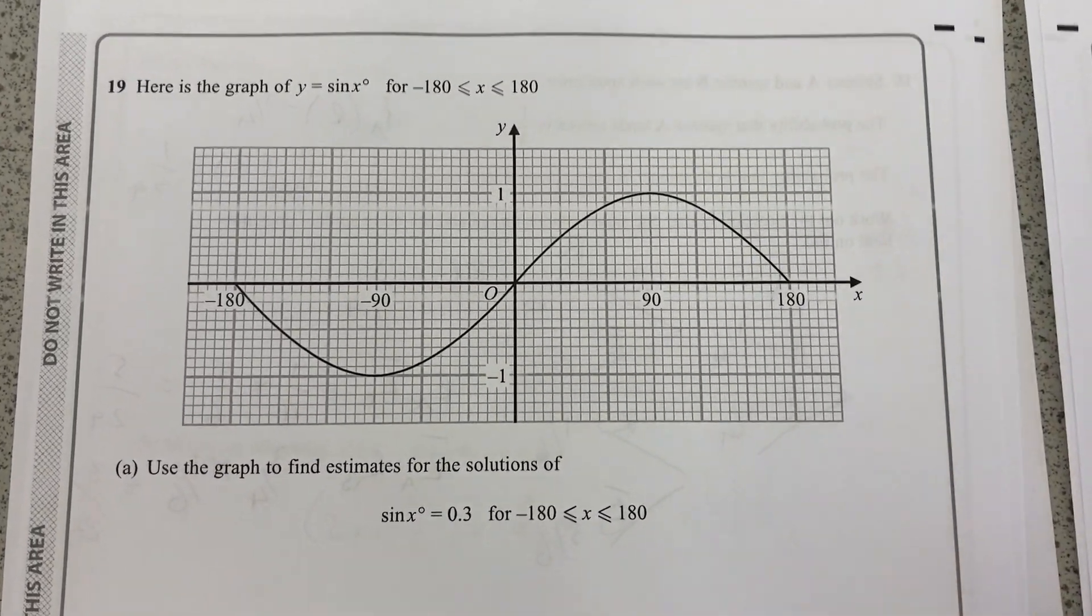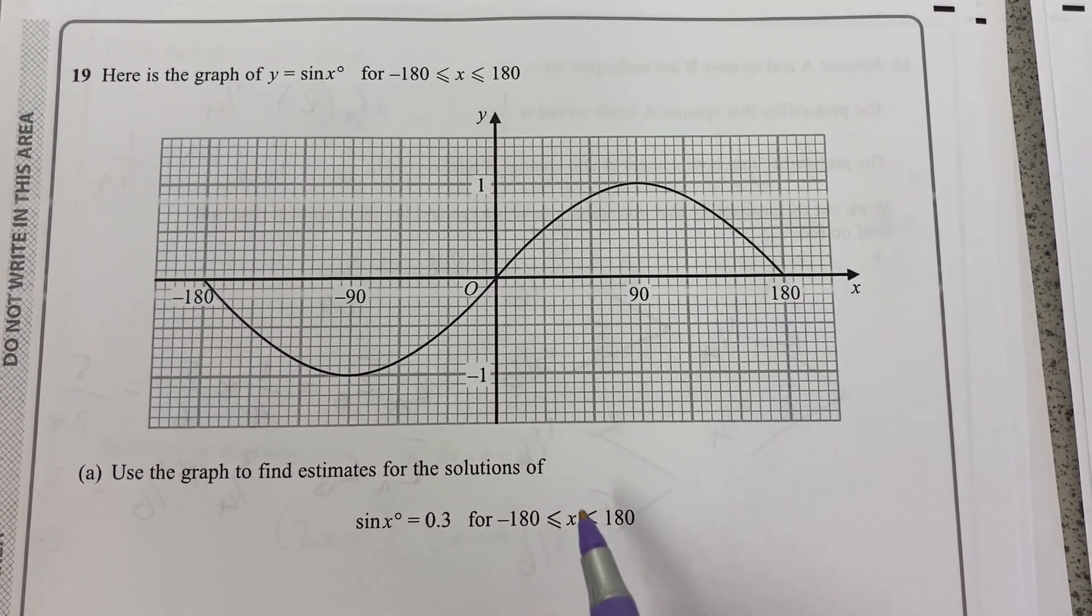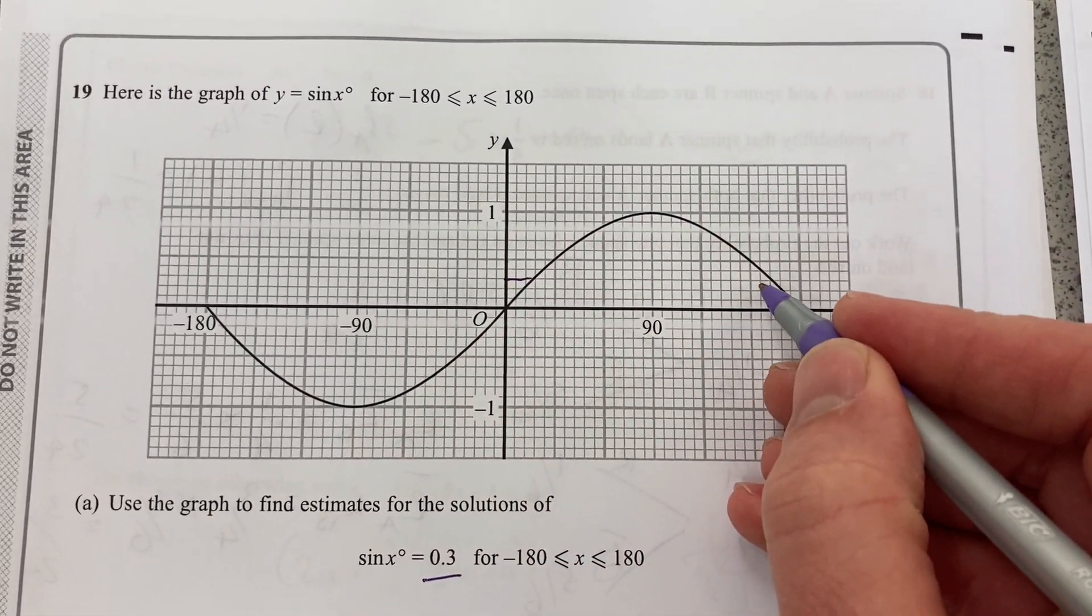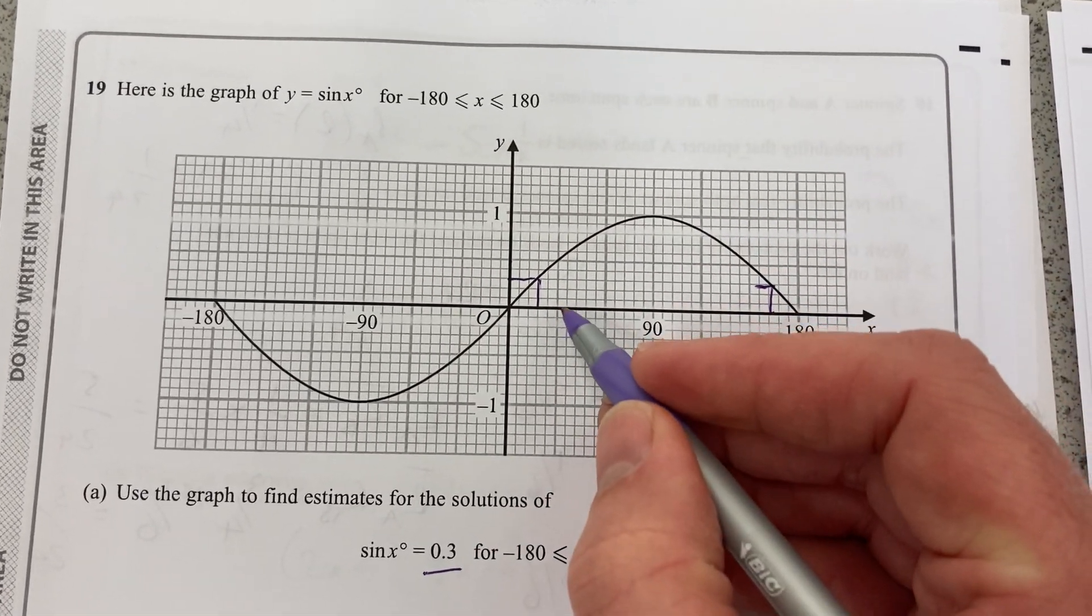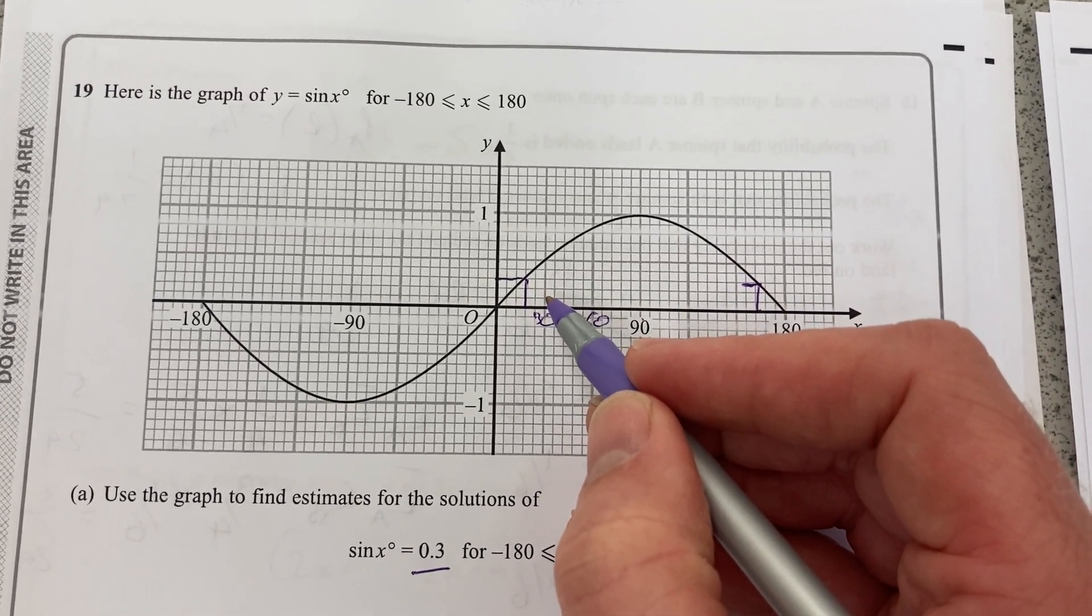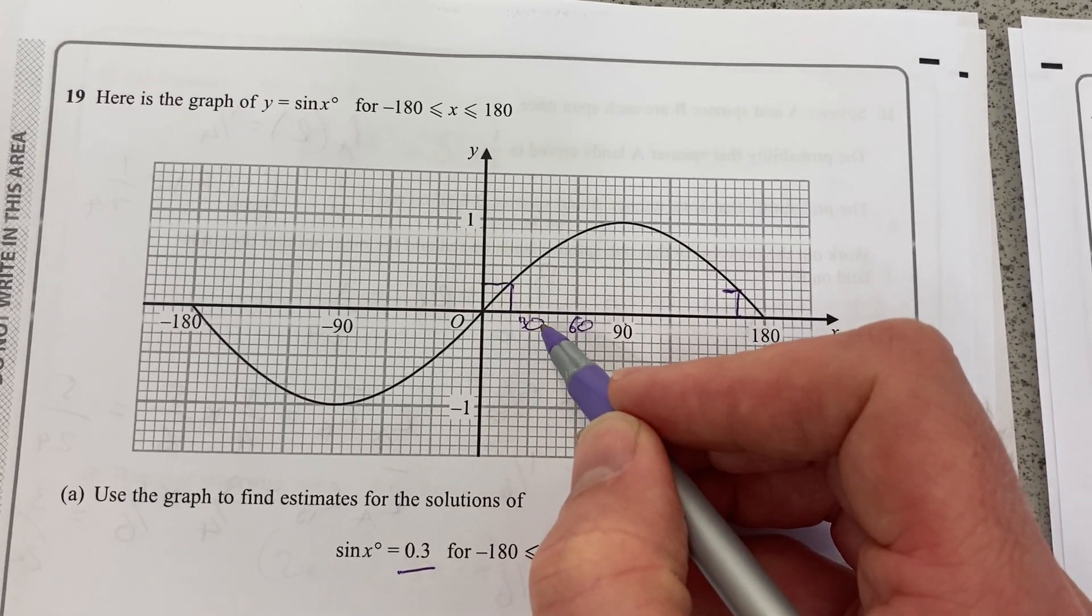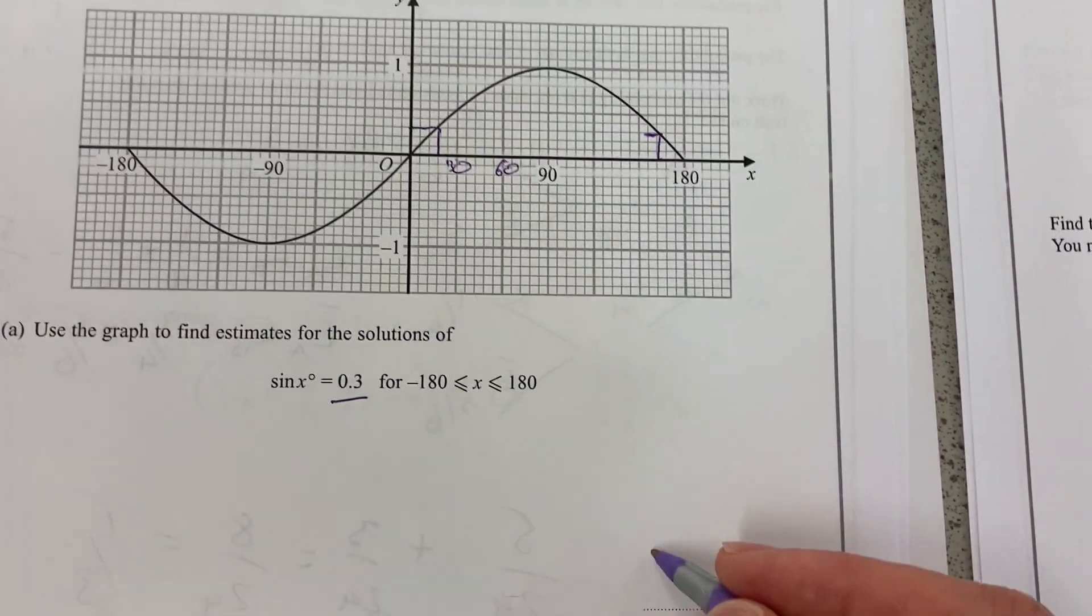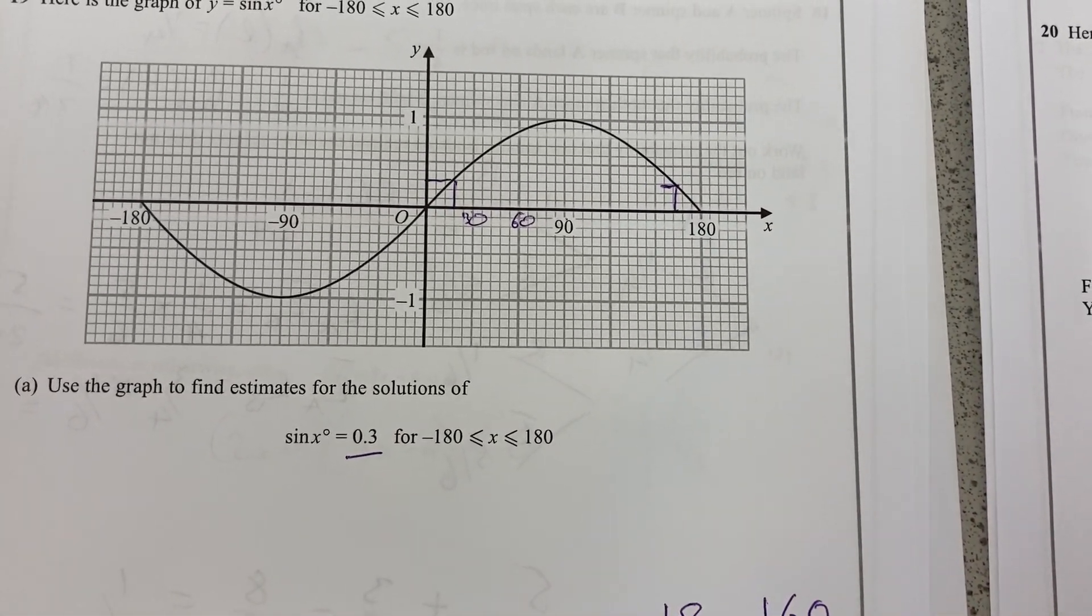Here is the graph of y equal to sine x between minus 180 and positive 180. Use the graph to find estimates for the solutions of sine x equal to 0.3. There's 0.5. So, there's 0.3. Looking at those values there. That's 90. So, that's 60. So, that's 30. And it's going down, let's say, in 6s. So, I'd say that's about 18 and about 160 or thereabouts.